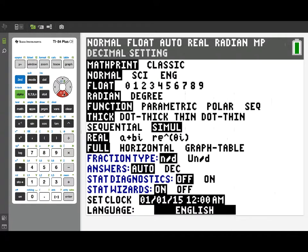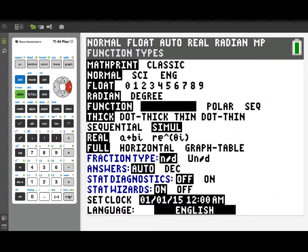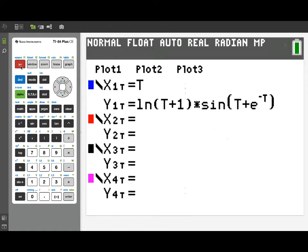Instead of the function plotter, we're going to find it useful to use parametric. Now we're going to change the plot type to parametric, and when we go to the y equals menu, we'll find pairs of functions for x and y, both in terms of time t.